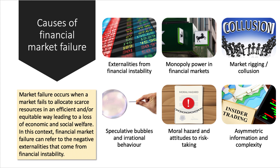Basically, what you do in this section of the course is focus on the generic meaning of market failure — when the market fails to allocate resources efficiently and equitably — and then apply it to financial markets. There are many causes of potential financial market failure: externalities from instability, the economics of monopoly power applied to banking, insurance, market rigging through collusion, speculative bubbles and potentially irrational behaviour, moral hazard, and asymmetric information. You take your market failure knowledge from Year 12 and apply those concepts to financial markets.